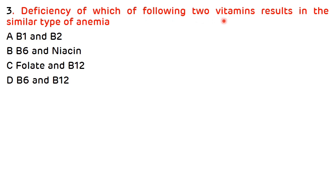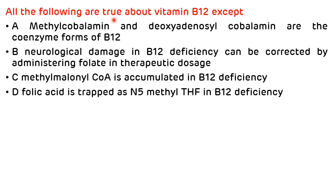Question 3: Deficiency of which two vitamins results in similar type of anemia — options B1 and B2, B6 and niacin, folate and B12, B6 and B12. Deficiency of vitamin B12 and folic acid causes similar megaloblastic anemia, so the correct answer is C. Question 4: All of the following are true about vitamin B12 except — methylcobalamin and deoxyadenosylcobalamin are the coenzyme forms (correct); neurological damage in B12 deficiency can be corrected by administering folate in therapeutic doses (incorrect — it should be corrected by vitamin B12); methylmalonyl-CoA is accumulated in B12 deficiency (correct); folic acid is trapped as N5-methyl tetrahydrofolate in B12 deficiency (correct). The correct answer is B.